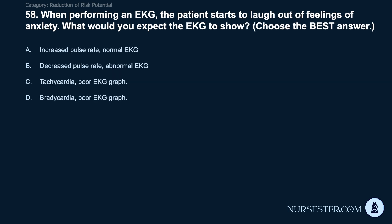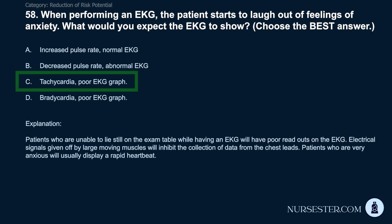Question 58: When performing an EKG, the patient starts to laugh out of anxiety. What would you expect the EKG to show? A) Increased pulse rate, normal EKG. B) Decreased pulse rate, abnormal EKG. C) Tachycardia, poor EKG graph. D) Bradycardia, poor EKG graph. Correct answer: C. Tachycardia, poor EKG graph. Patients unable to lie still during an EKG will have poor readouts. Electrical signals from large moving muscles will inhibit data collection from the chest leads. Patients who are very anxious will usually display a rapid heartbeat.